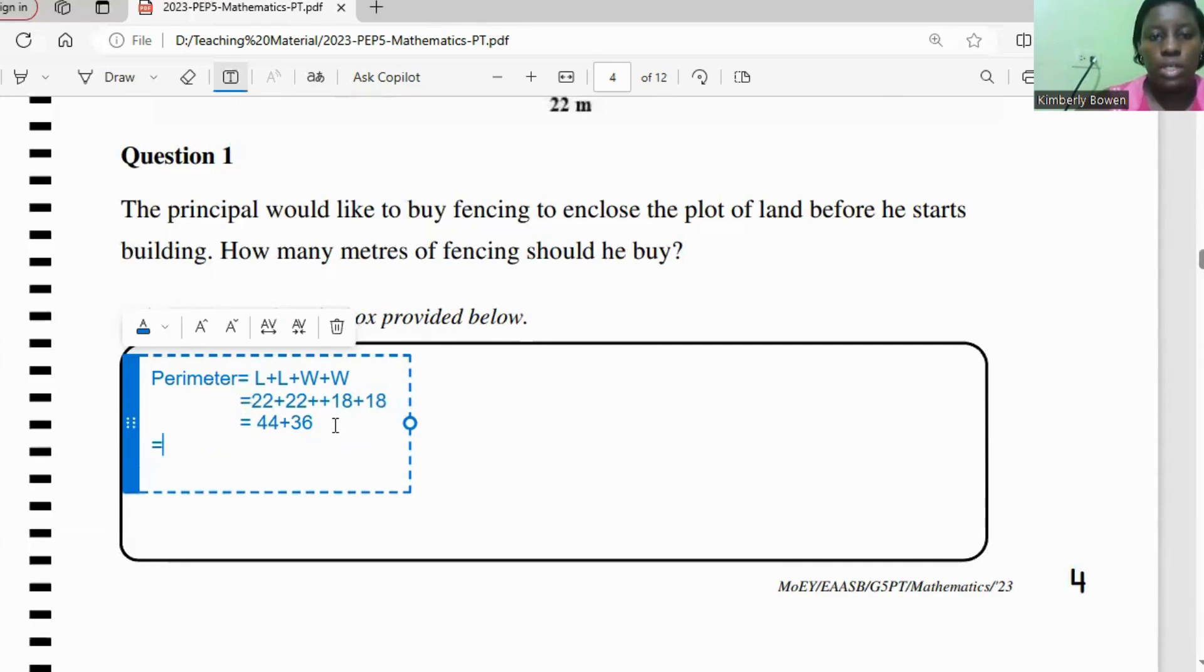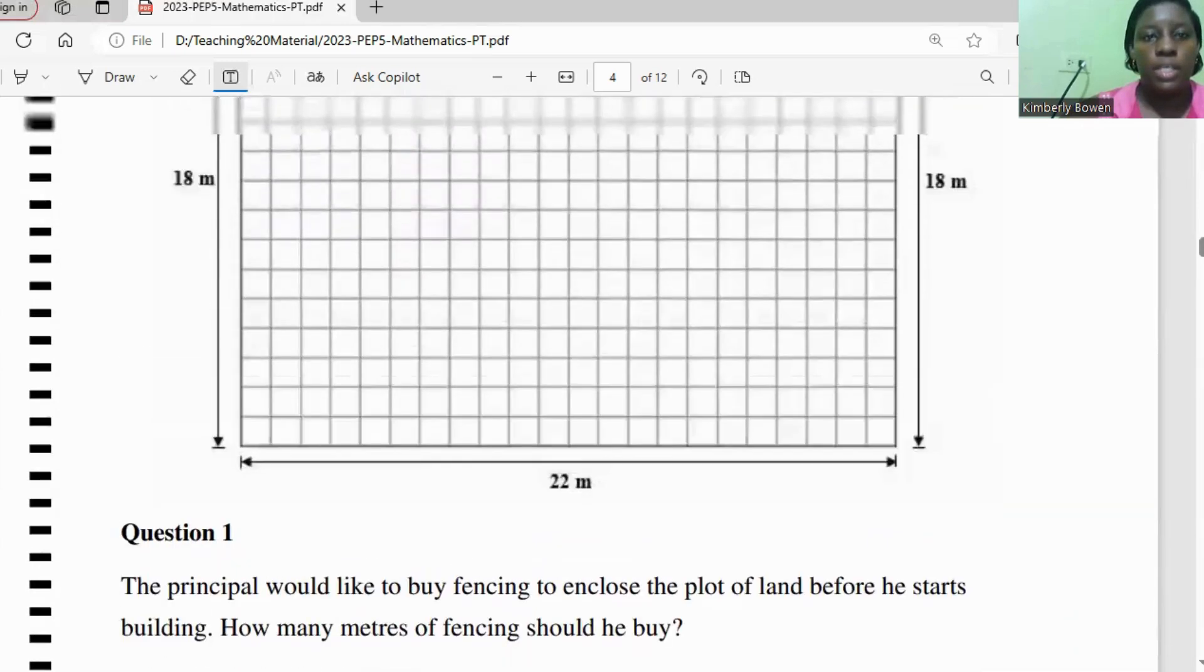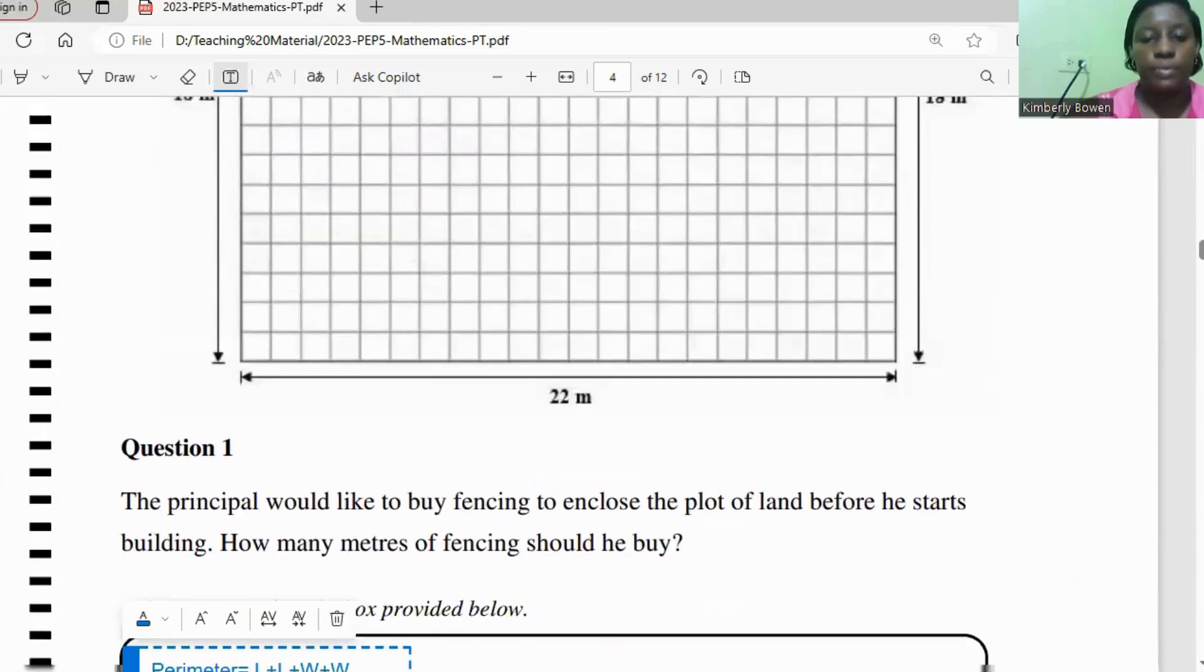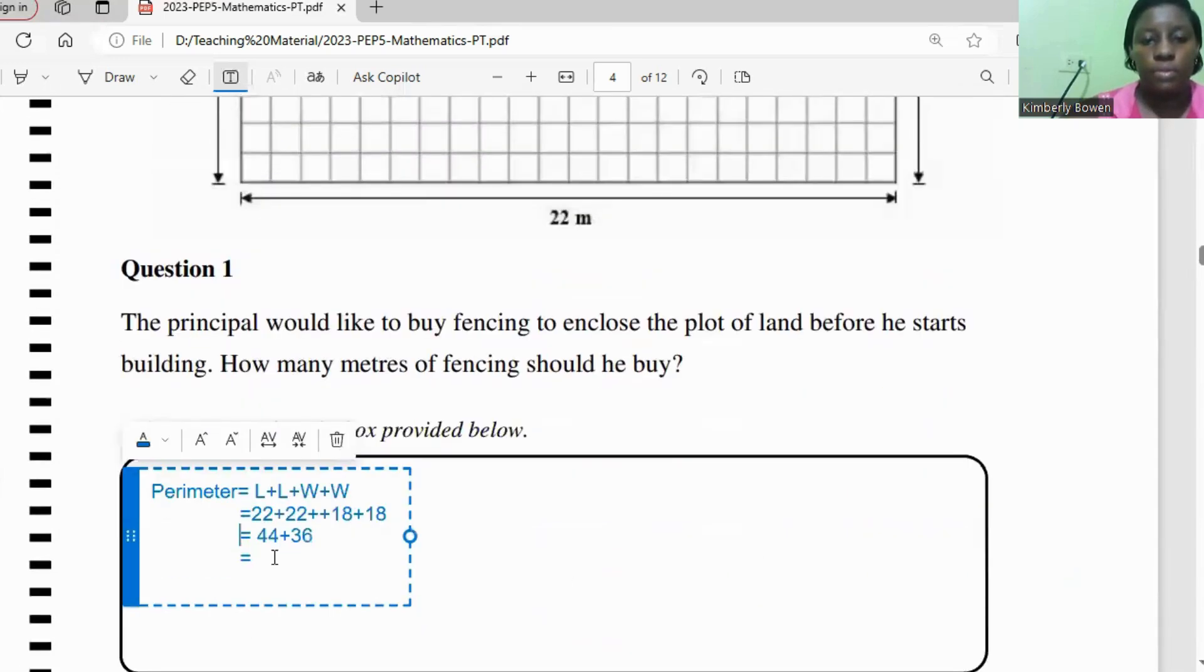So the total is, let me just look back at the dimensions just to make sure I'm adding the correct thing. I know it's 22 because I could see it there. All right, so 18 is correct. So this looks like it is 40 and it's like 80, 80 meters. So that's the answer for number one.